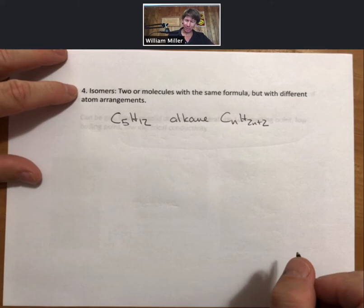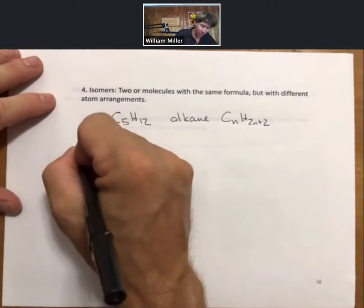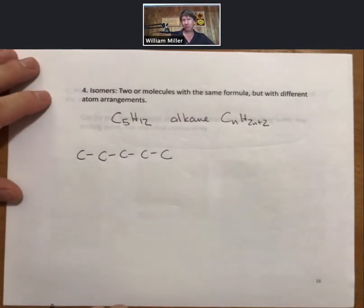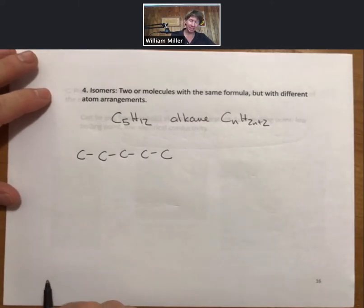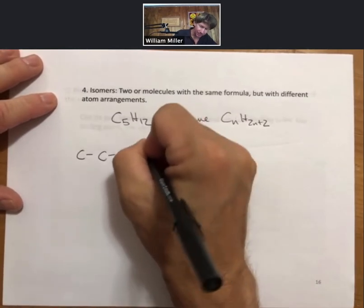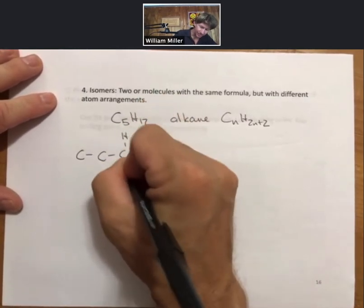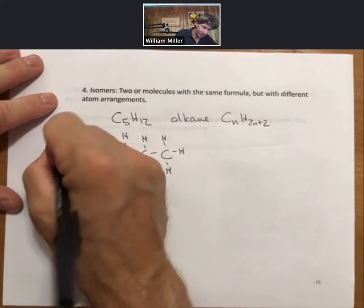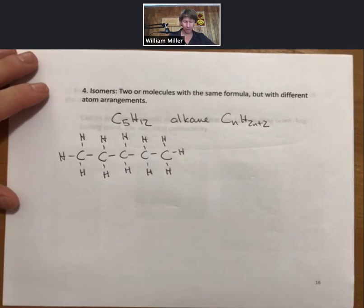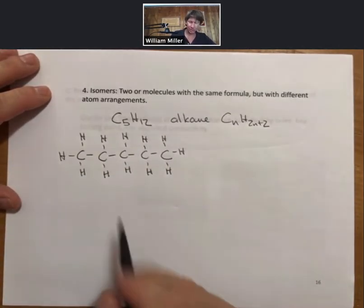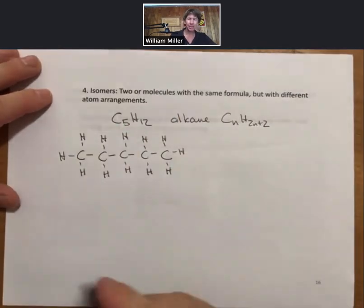Now, isomers are going to be molecules with the same formula but with different atom arrangements. Here's one isomer. Put all five carbons in a row. Fill in the hydrogens until each of the carbons has four bonds. And lo and behold, you'll find there are 5, 6, 7, 8, 9, 10, 11, 12 hydrogens. That's one isomer. It's always the easiest isomer.